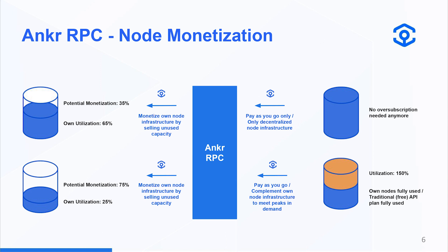On the other hand, users without their own node infrastructure no longer need to rely on traditional API providers that force over-subscription. They can simply use a pay-as-you-go model, or a hybrid model where they know they'll always have a certain base amount of API calls per second. Instead of taking a higher plan, they can downgrade and meet demand peaks by connecting to Anchor RPC as a pay-as-you-go complement to their existing API solution or node infrastructure.